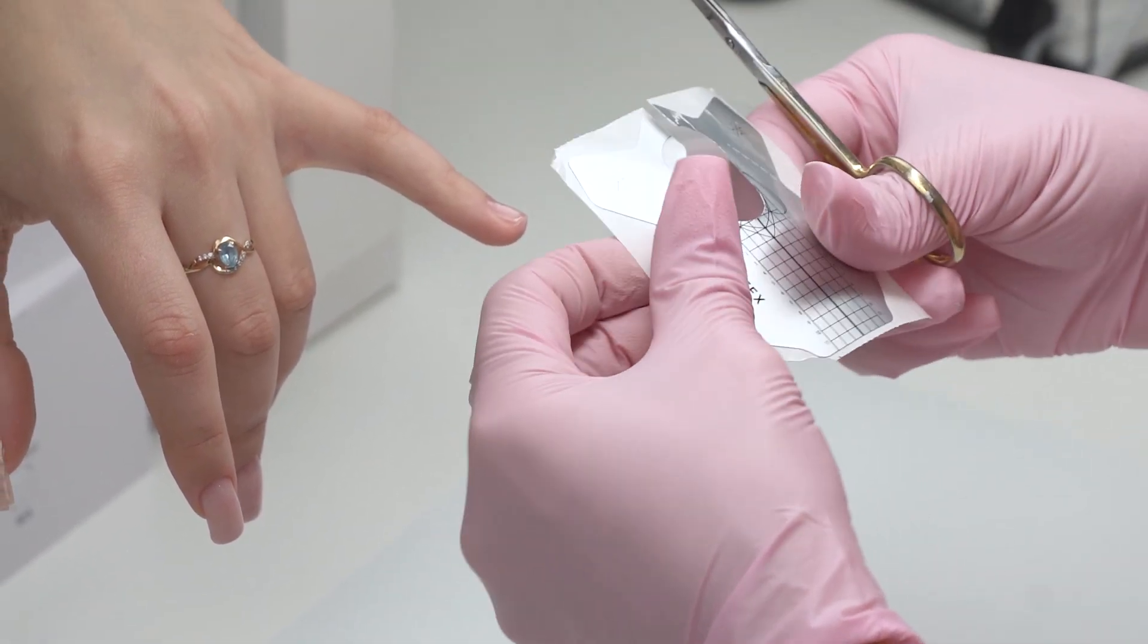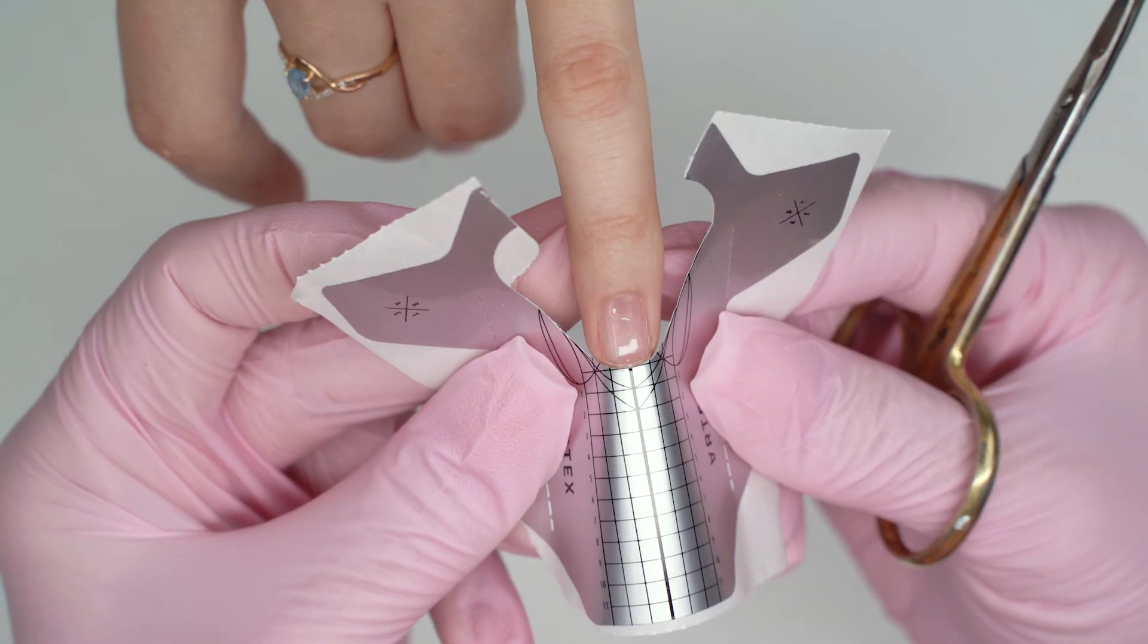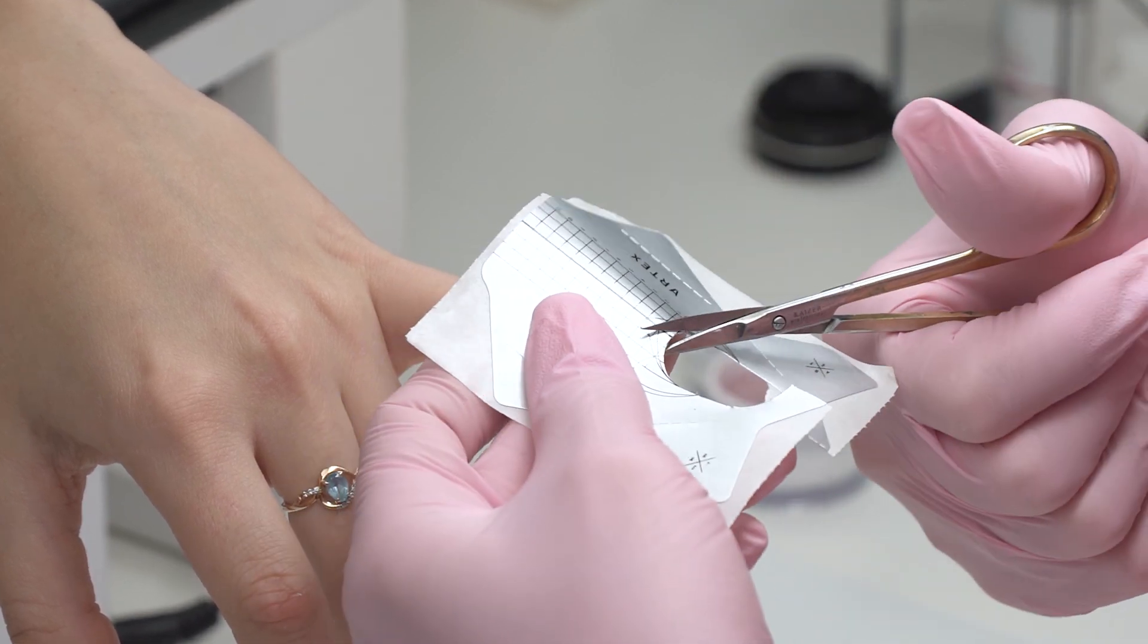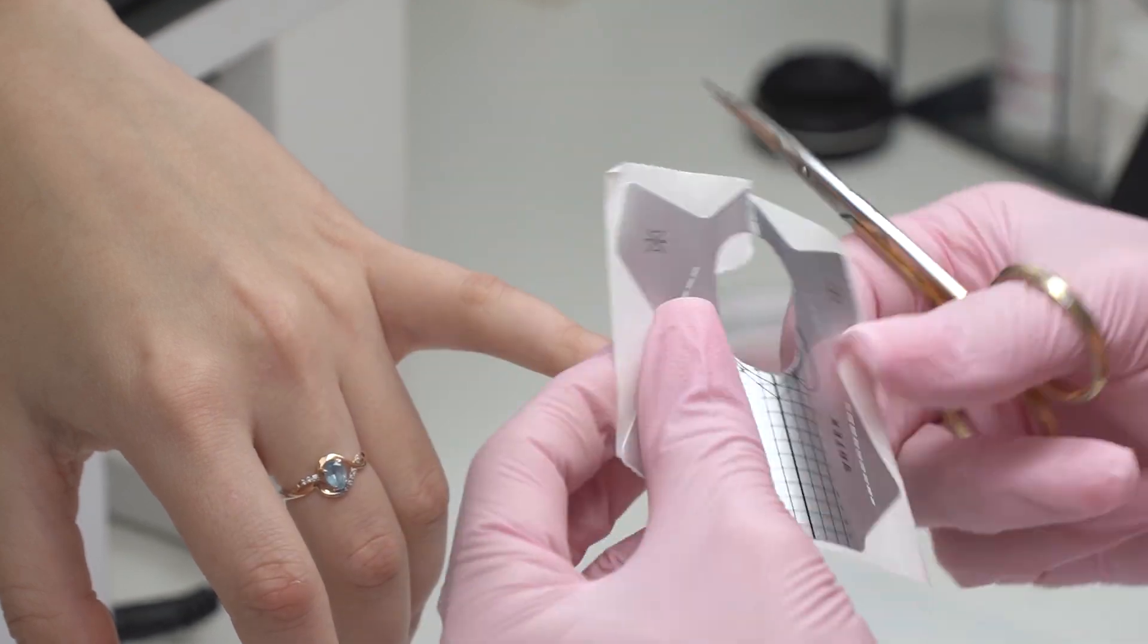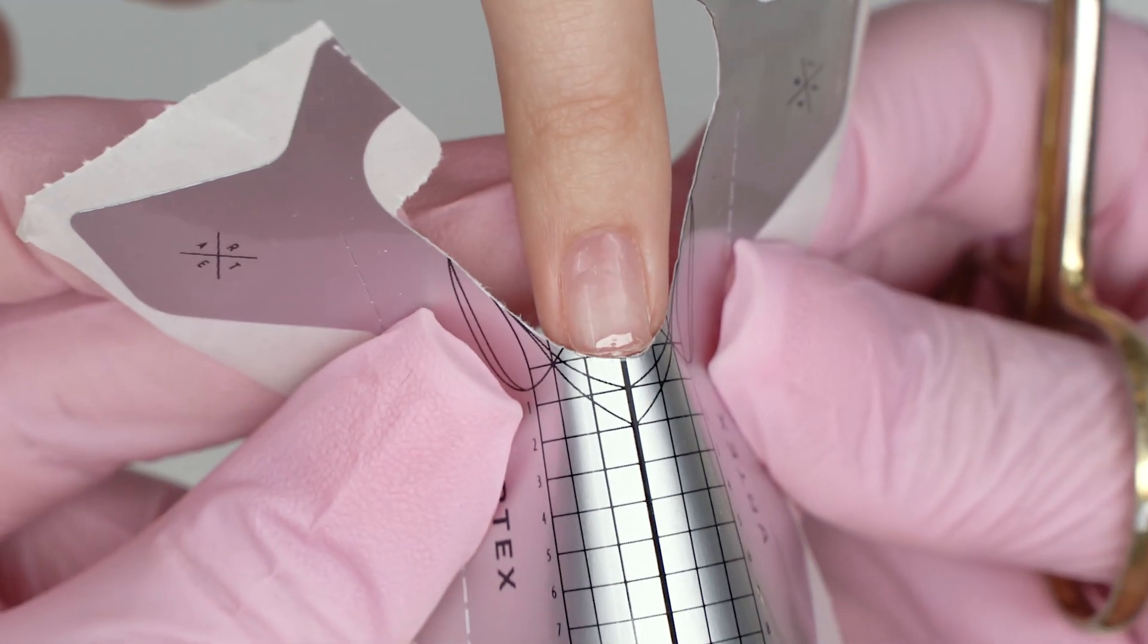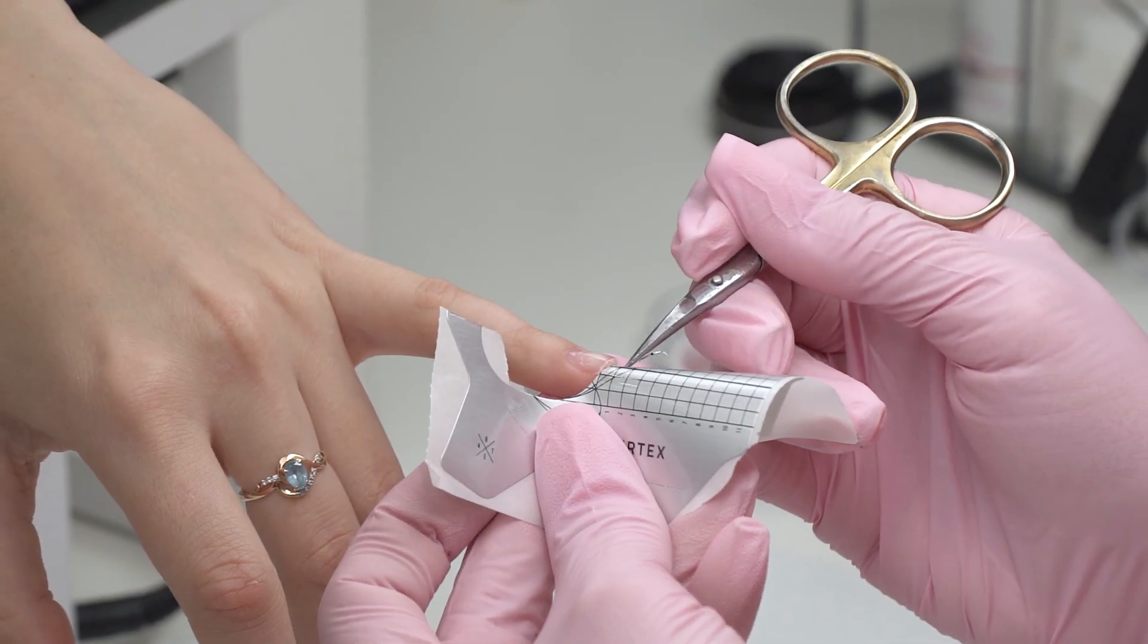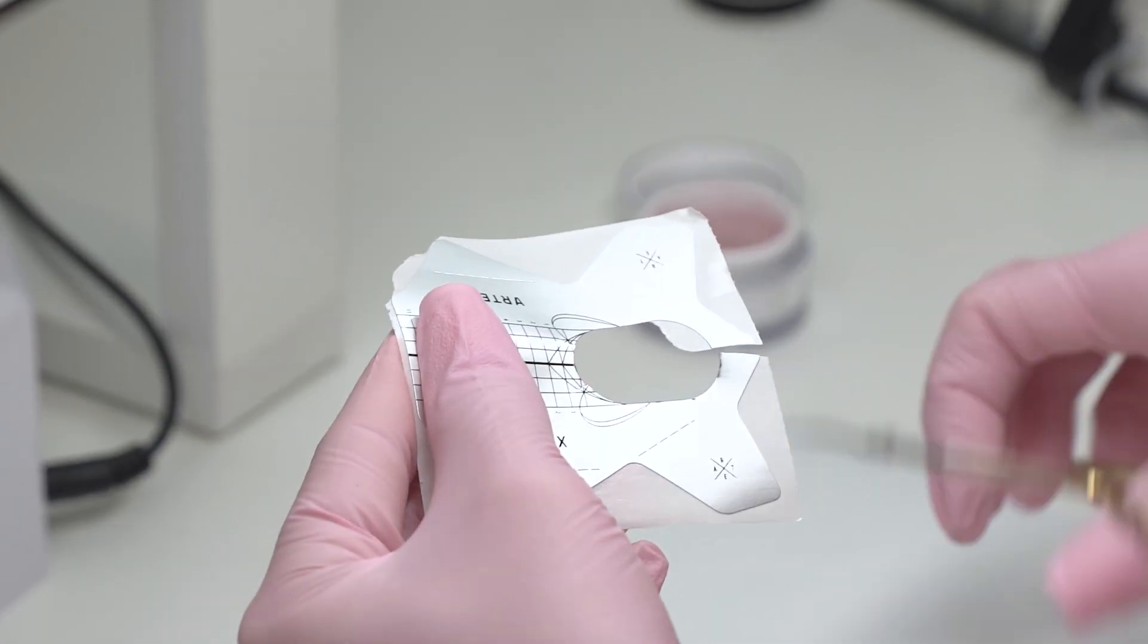I'm going to use a paper form to extend the pinky nail. I remove the tab first and try the form on. Now I need to trim it in the center to get rid of the gap between the nail and the form. Always make sure that this line on the form follows the central axis of the finger. I make cuts to secure the form on the nail and get a perfect C curve.